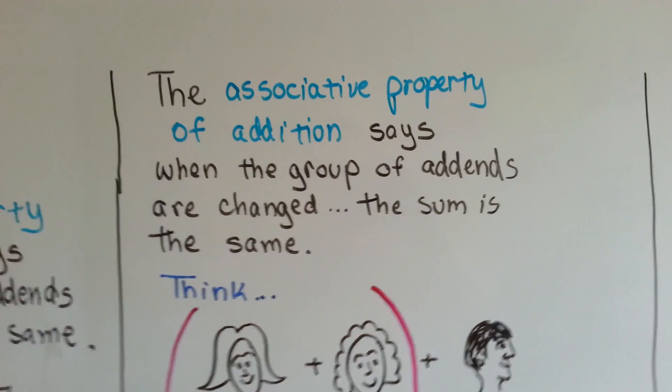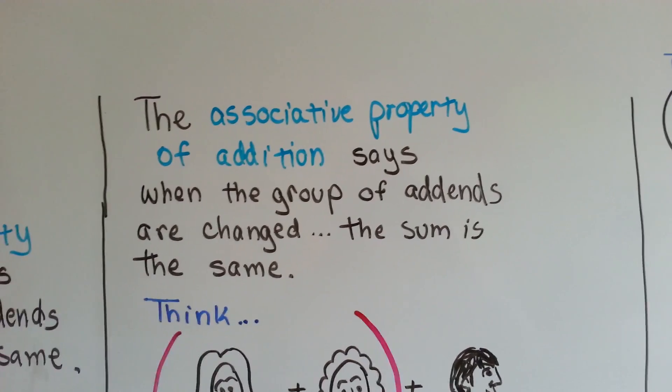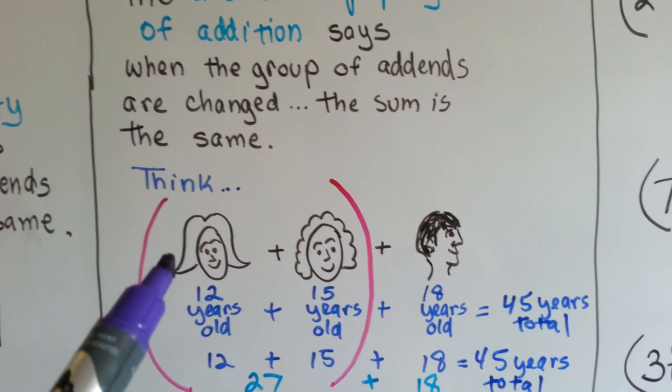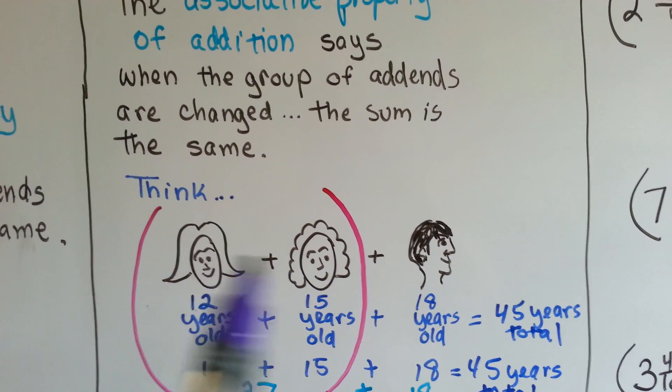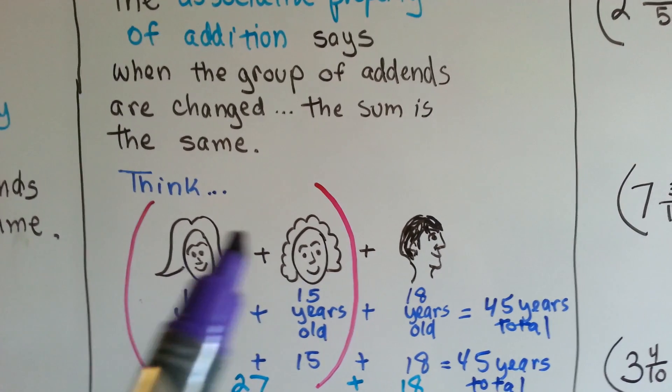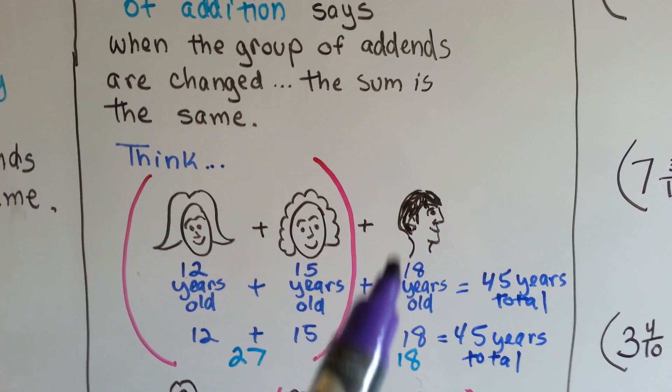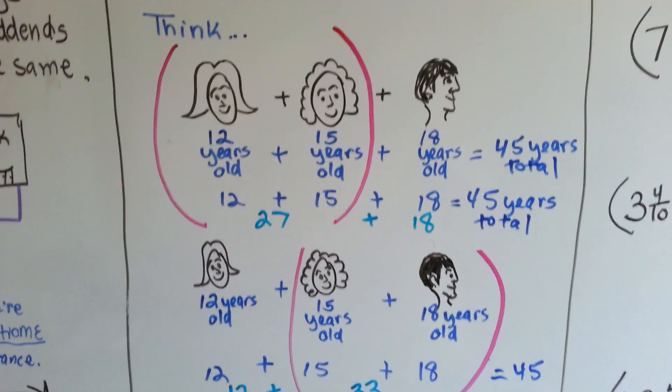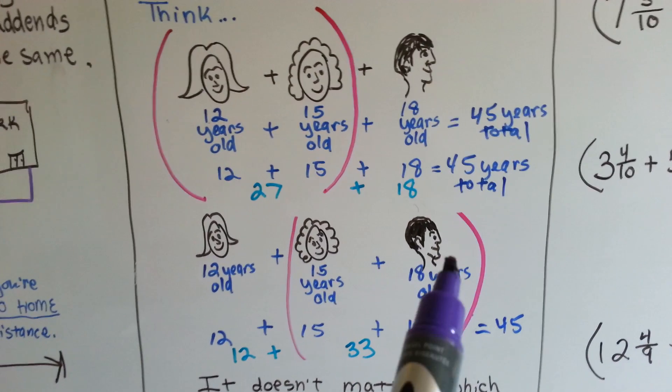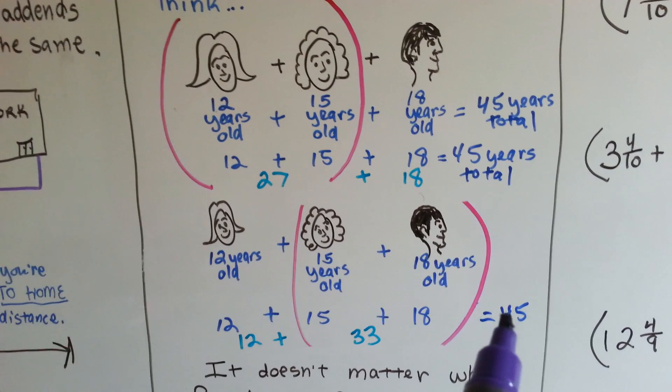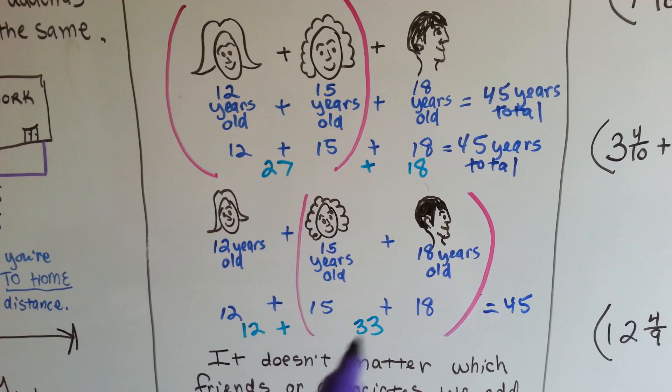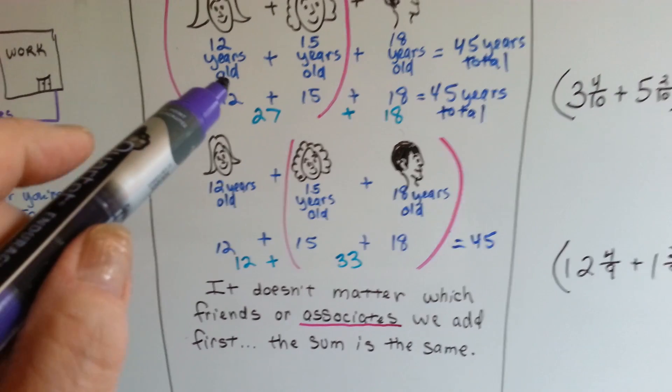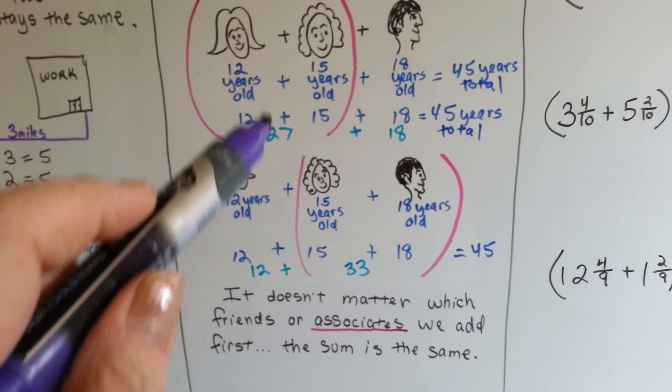The associative property of addition says when the group of addends are changed, the sum is the same. So think, there's three friends, a 12-year-old, a 15-year-old, and an 18-year-old. Maybe they're siblings. When you add the 12-year-old to the 15-year-old, you get 27. Then you add the 18-year-old's age, and we get 45 years old total. If we grouped the 15-year-old to the 18-year-old, it's still going to equal 45 total years. That's 33 and 12. It's still going to be 45. So it doesn't matter which friends or associates we add first. The sum is the same.